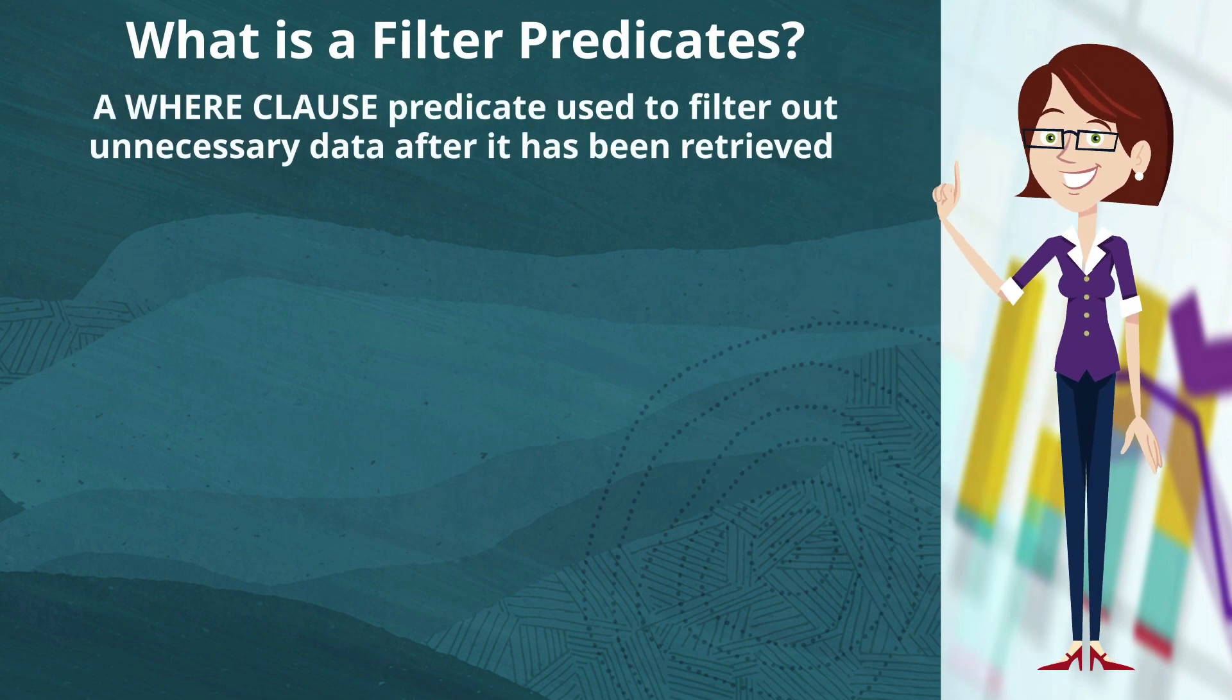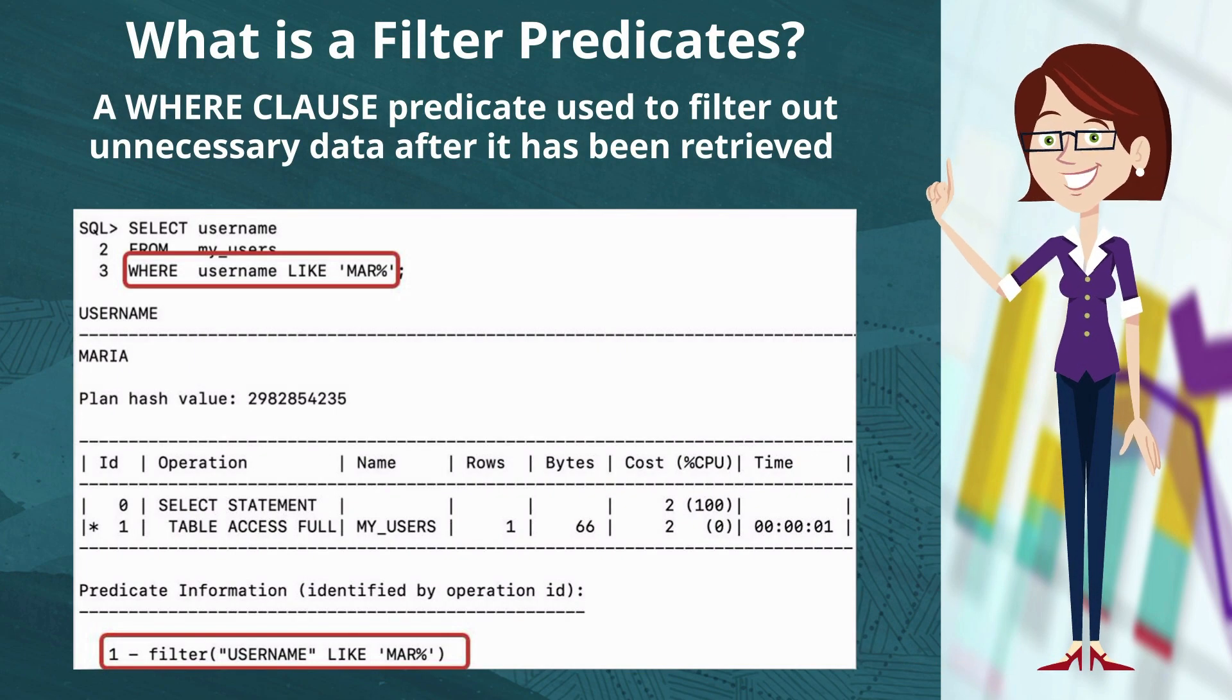If it's not an access predicate, the where clause predicate is treated as a filter predicate. And these are predicates that are used after the data has been retrieved to filter out unnecessary data. In my example here, we're going to do a full table scan on my users, and then we'll apply the like predicate we have there in the where clause predicate after all of the data has been retrieved.